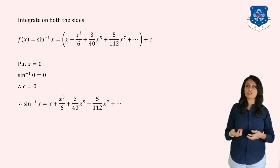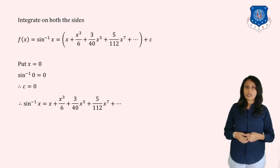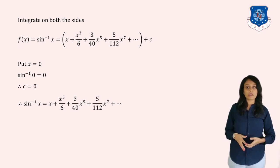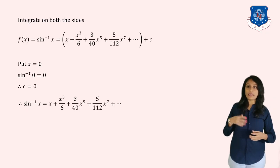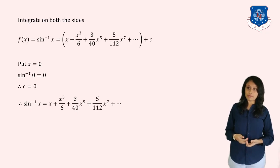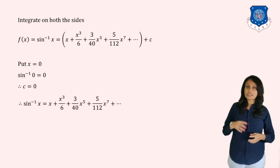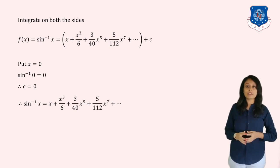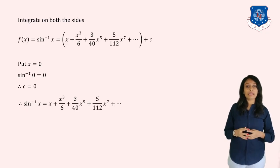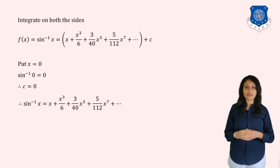In summary: we took f(x) = sin⁻¹x, found its derivative, rewrote it as a power using the binomial series with x replaced by −x² and n replaced by −1/2. We simplified and integrated to get f(x), then removed the constant c by setting x = 0, giving the final series: sin⁻¹x = x + x³/6 + (3/40)x⁵ + …